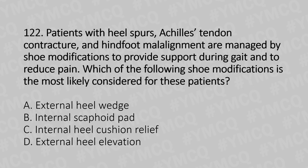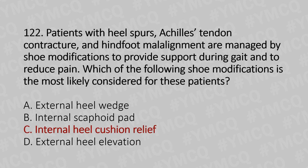Patients with heel spur, tight tendon contracture, and hind foot malalignment are managed by shoe modification to provide support during gait and reduce pain. Which of the following shoe modifications is most likely considered for these patients? Option A: external heel wedge. Option B: internal scaphoid pad. Option C: internal heel cushion relief. Option D: external heel elevation. The answer is option C — internal heel cushion relief.